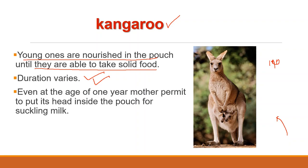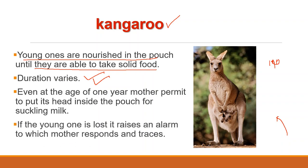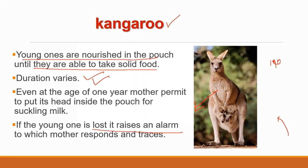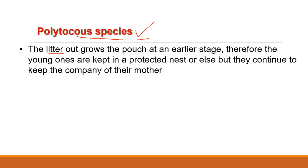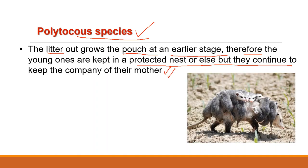Even at this stage, the young keeps the company of the mother and at intervals is still permitted to put its head inside the pouch for sucking milk. This continues till it is about 1 year old. During this special care period, if the young one gets lost, it raises an alarm to which the mother responds and traces it. In polytocous species — polytocous meaning producing several young ones at each birth, also known as a litter — the litter outgrows the pouch at an earlier stage. Therefore, at this stage, the young ones are kept in a protected nest, but they continue to keep the company of their mother until they are capable of fending for themselves.